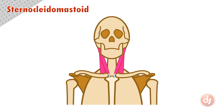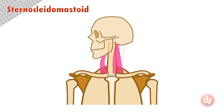The sternocleidomastoid moves the head. Because it anchors to the chest and acts on the side of the head, if it contracts, it will pull on the side of the head, swiveling it around. The head will turn in the opposite direction of whichever muscle is contracting.